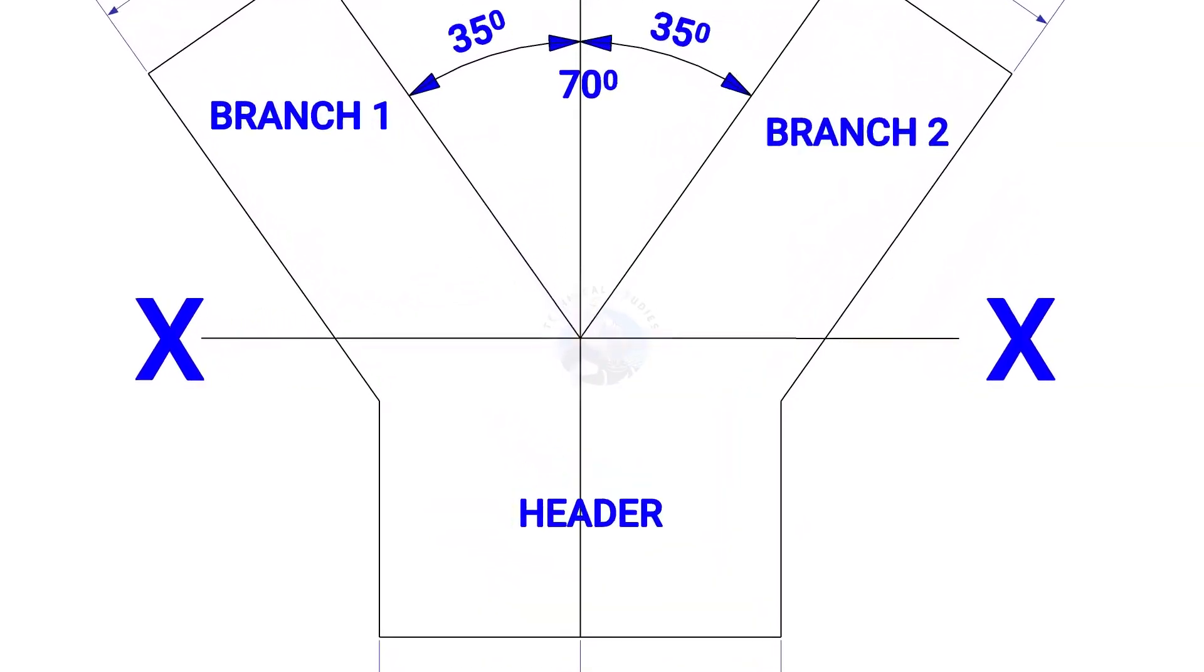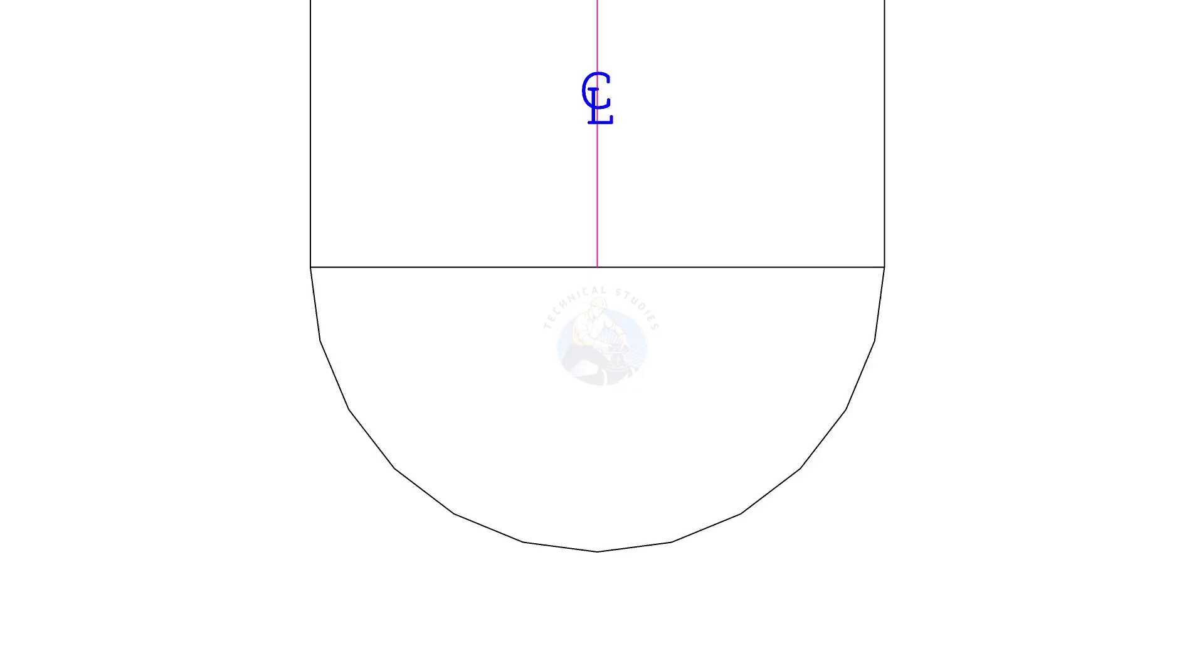Draw a half circle below the header. Draw lines connecting the branch and header meeting point to the center, as shown. The radius shall be half diameter of the header.